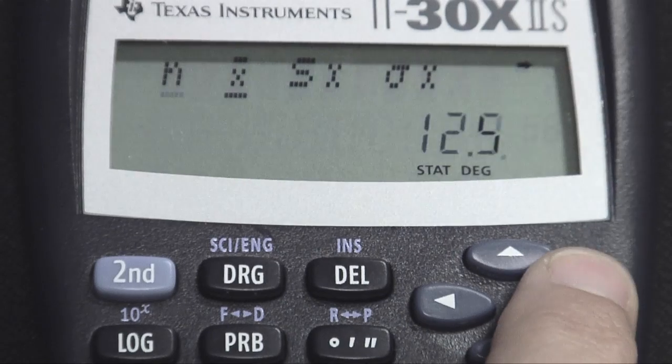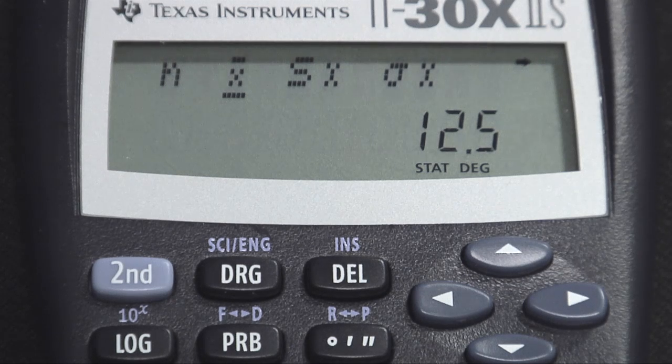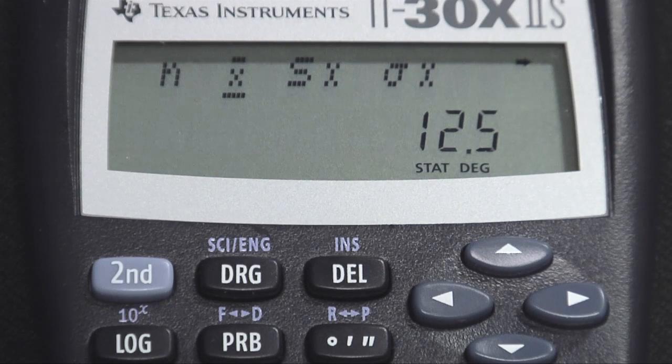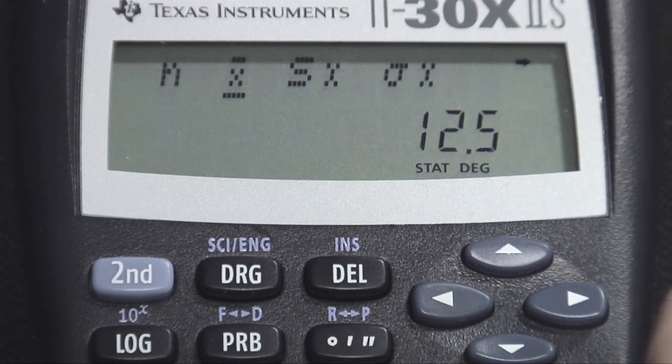I'm going to arrow once over and have the X bar. Which now it just looks like it's in bars. But the X bar is underlined, and that is my sample average, 12.5. Remember X bar, the symbol for sample average, is calculated with the same formula as mu, the symbol for the population average. So both the sample and population average are 12.5.